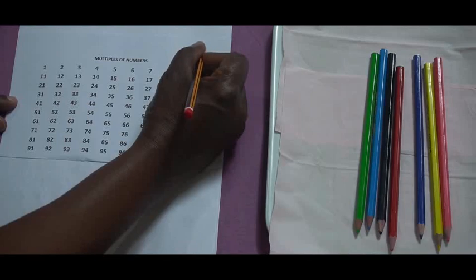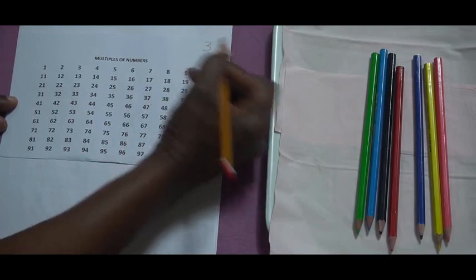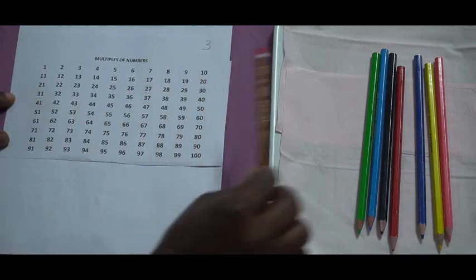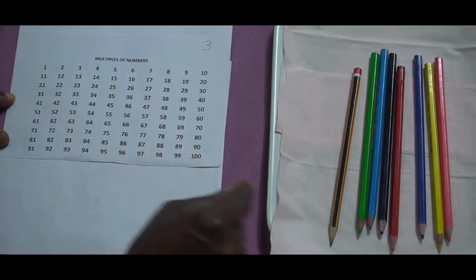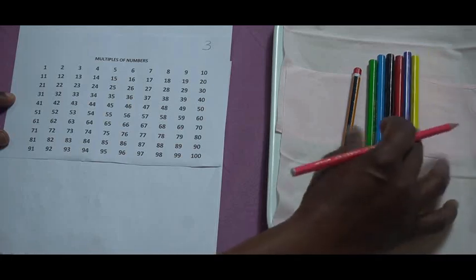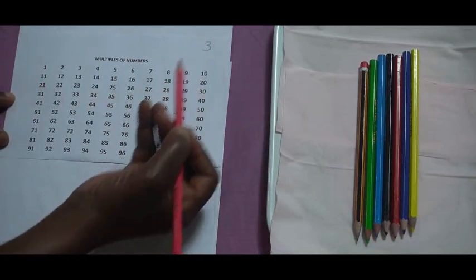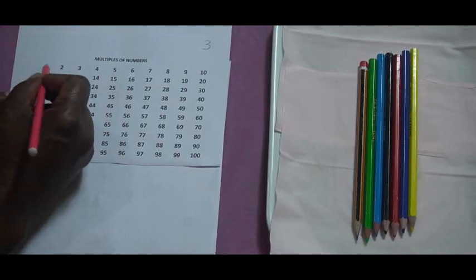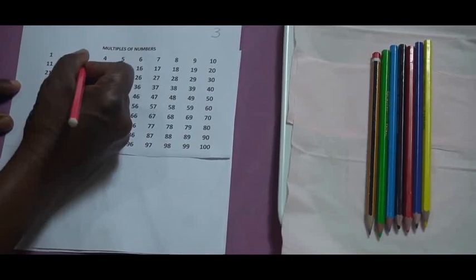So I'm going to write my 3 here to show that I want to find out the multiples of 3 from 1 to 100. I can choose any color, any color pencil here. I can decide to take the pink one, but any color is fine. Multiples of 3 from number 1 to 100: 1, 2, 3. 3 is a multiple of 3.